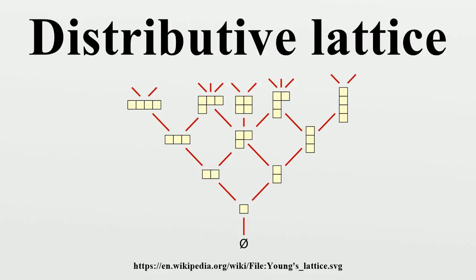If empty joins and empty meets are disallowed, the resulting free distributive lattices have two fewer elements. Their numbers of elements form the sequence: 1, 4, 18, 166, 7,579, 7,828,352, 2,414,682,040,996.